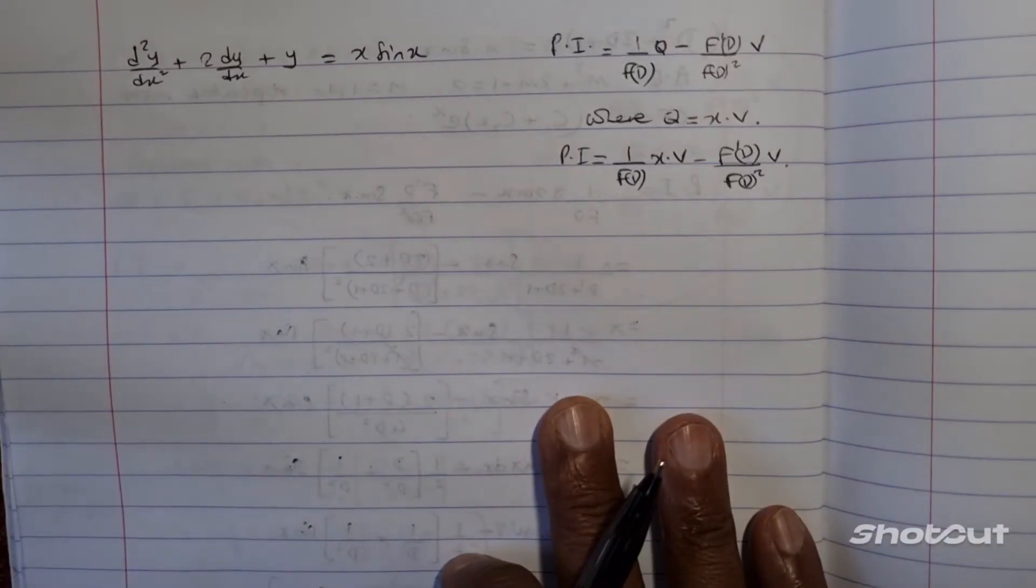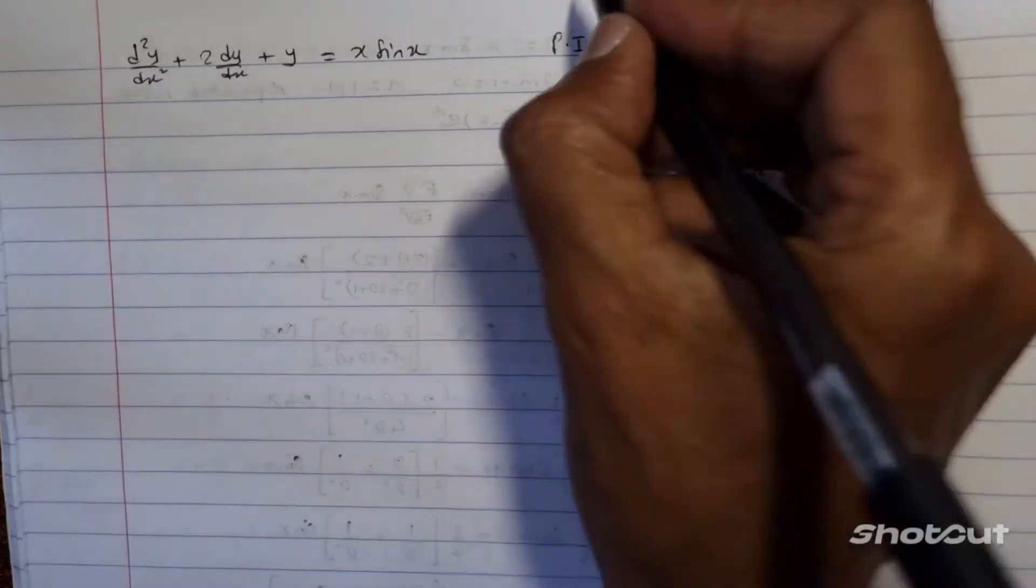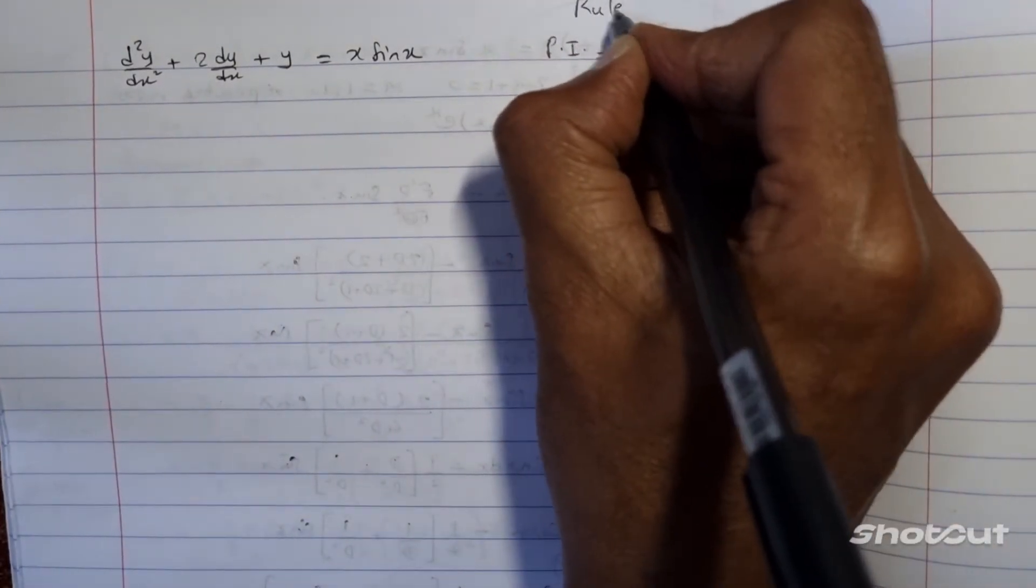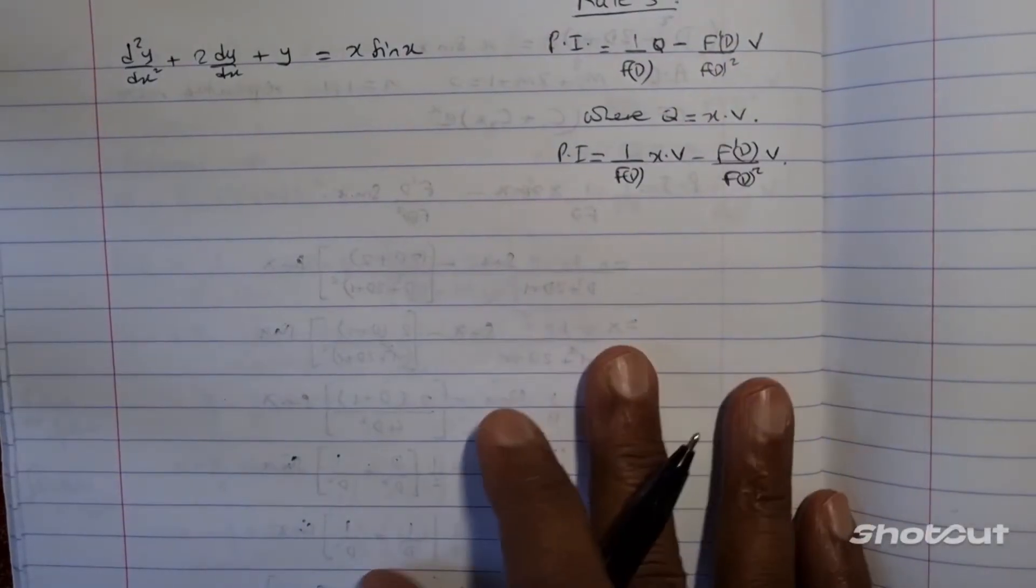Hi, what we have here is a simple differential equation where rule number five will be applied in trying to solve such an equation. Now, how do we do this?